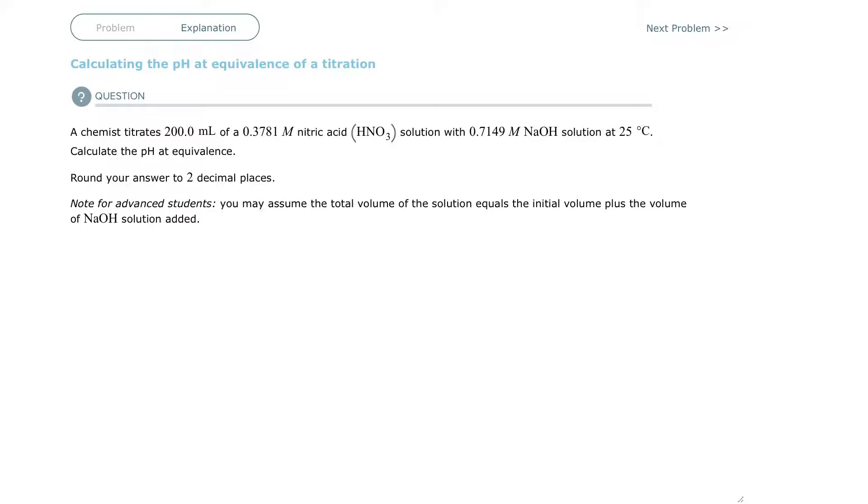So a strong acid and a strong base titrate completely down to seven. So the answer of this problem, since you have nitric acid and sodium hydroxide, is seven. So the pH is equal exactly to seven.